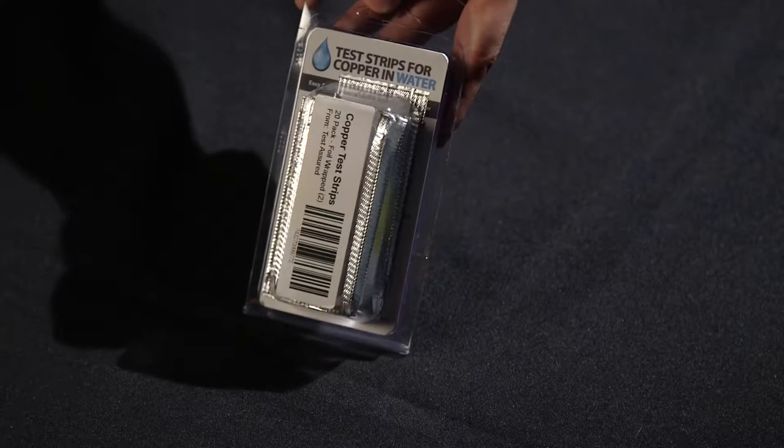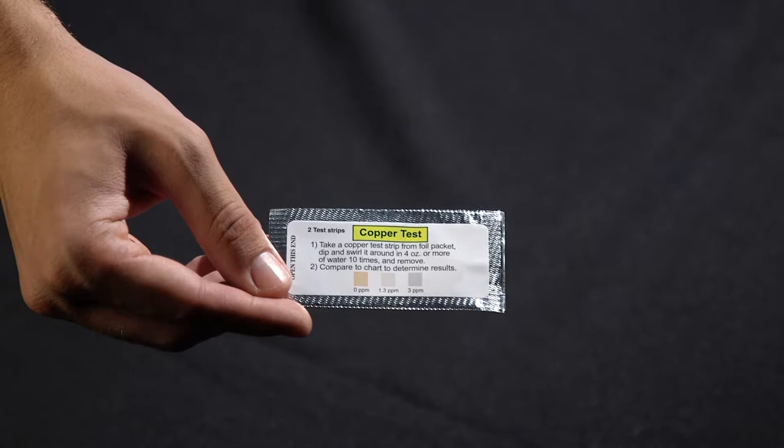For this test, we'll only need three items from your water test analysis kit: a water container, one copper test strip, and your test color chart for comparing results.